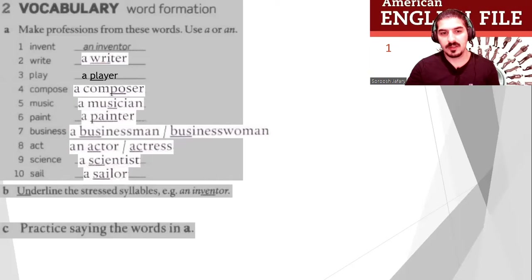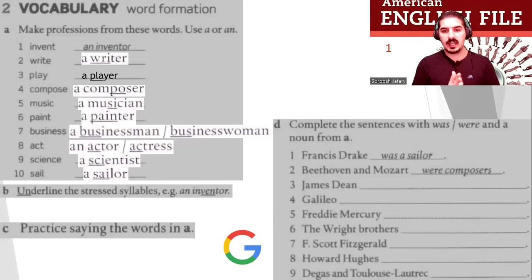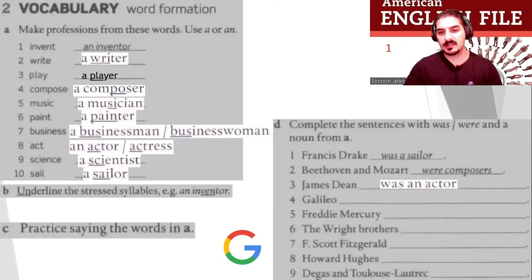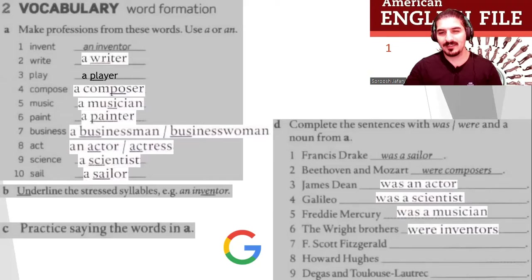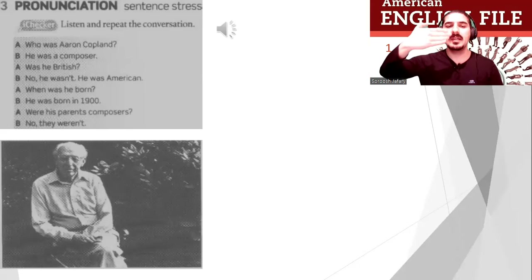Now complete the sentences with was or were and a profession noun. Francis Drake, Beethoven, and Mozart — if you don't know, use Google. Francis Drake was a sailor. Beethoven and Mozart were composers. James Dean was an actor. Galileo was a scientist. Freddie Mercury was a musician. The Wright Brothers were inventors — they made the plane. F. Scott Fitzgerald was a writer. Howard Hughes was a businessman. Degas and Toulouse-Lautrec were artists. Well done!